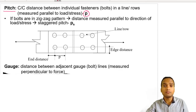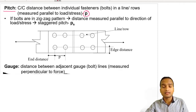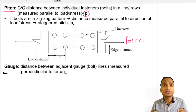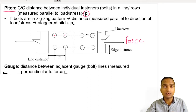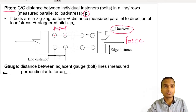This is the top view of a double cover plate butt joint with two rows of bolting on each plate, and the force is applied axially. We measure distances parallel to the load direction — the center-to-center distance between two consecutive bolts is called pitch, and that value is used in calculations.